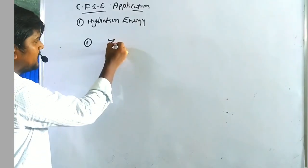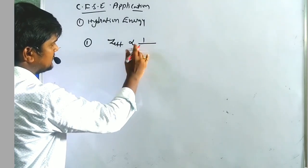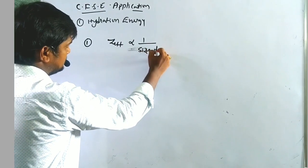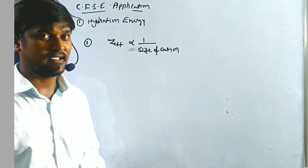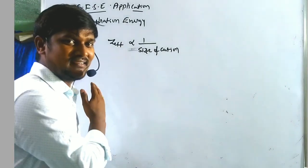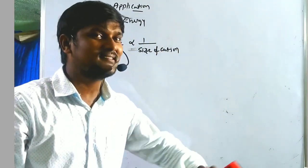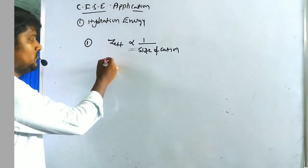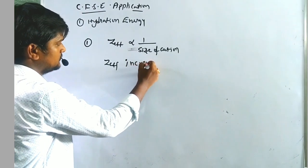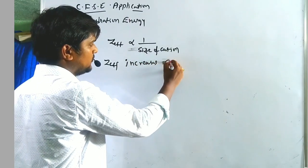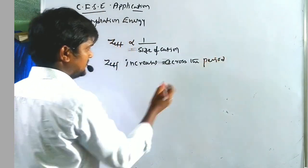Effective nuclear charge is inversely proportional to the size of the cation. Left to right, size of the cation decreases, which means effective nuclear charge increases across the period.